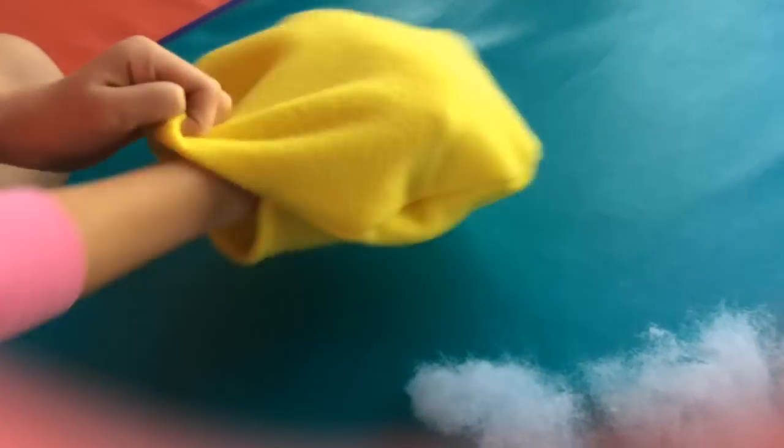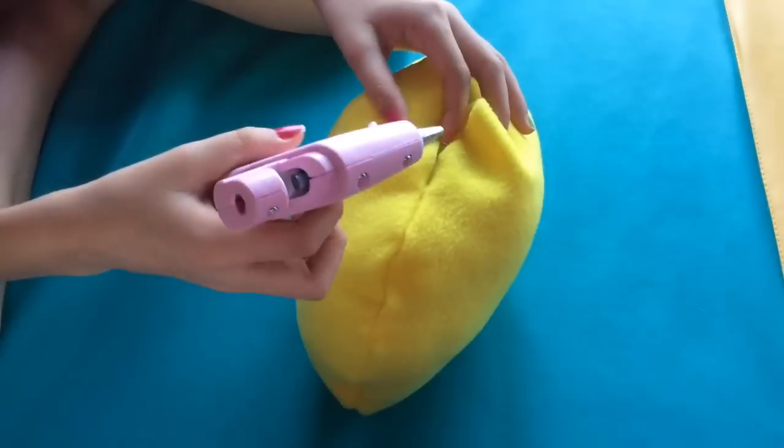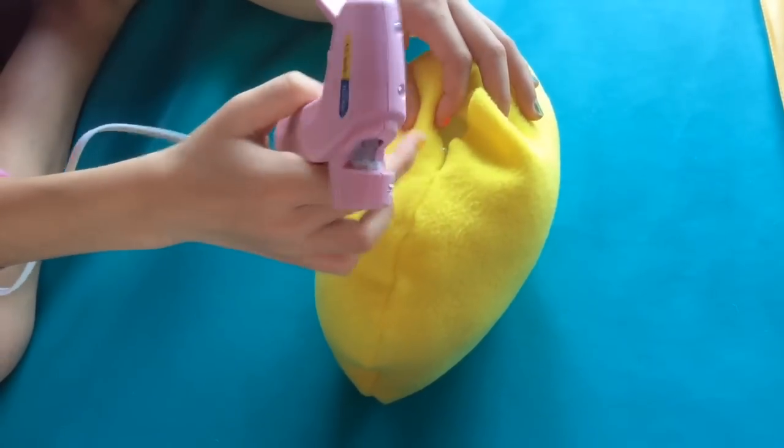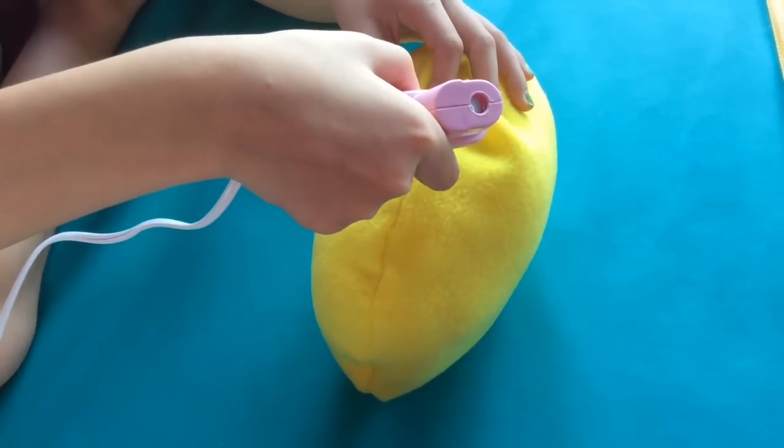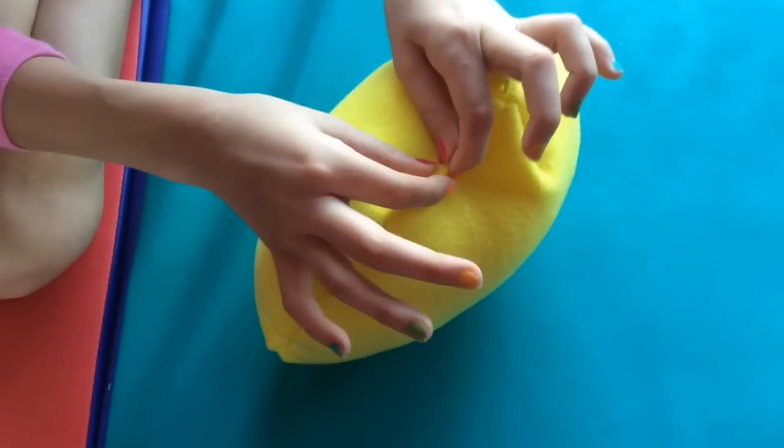When you are finished with that, it should look a little something like this. Then you are going to hot glue gun the hole that you used to put your hand in. You are going to hot glue gun the two sides together.